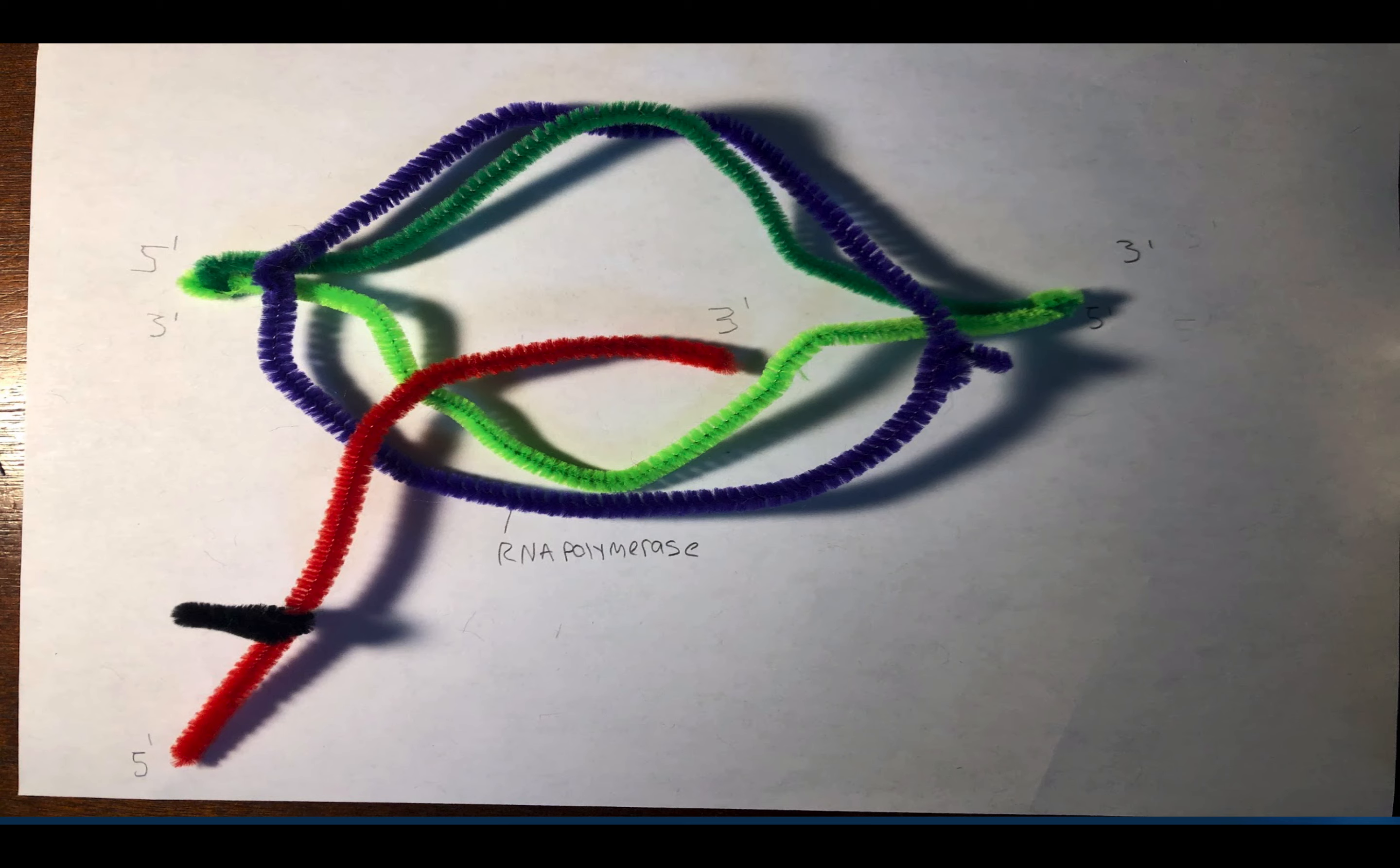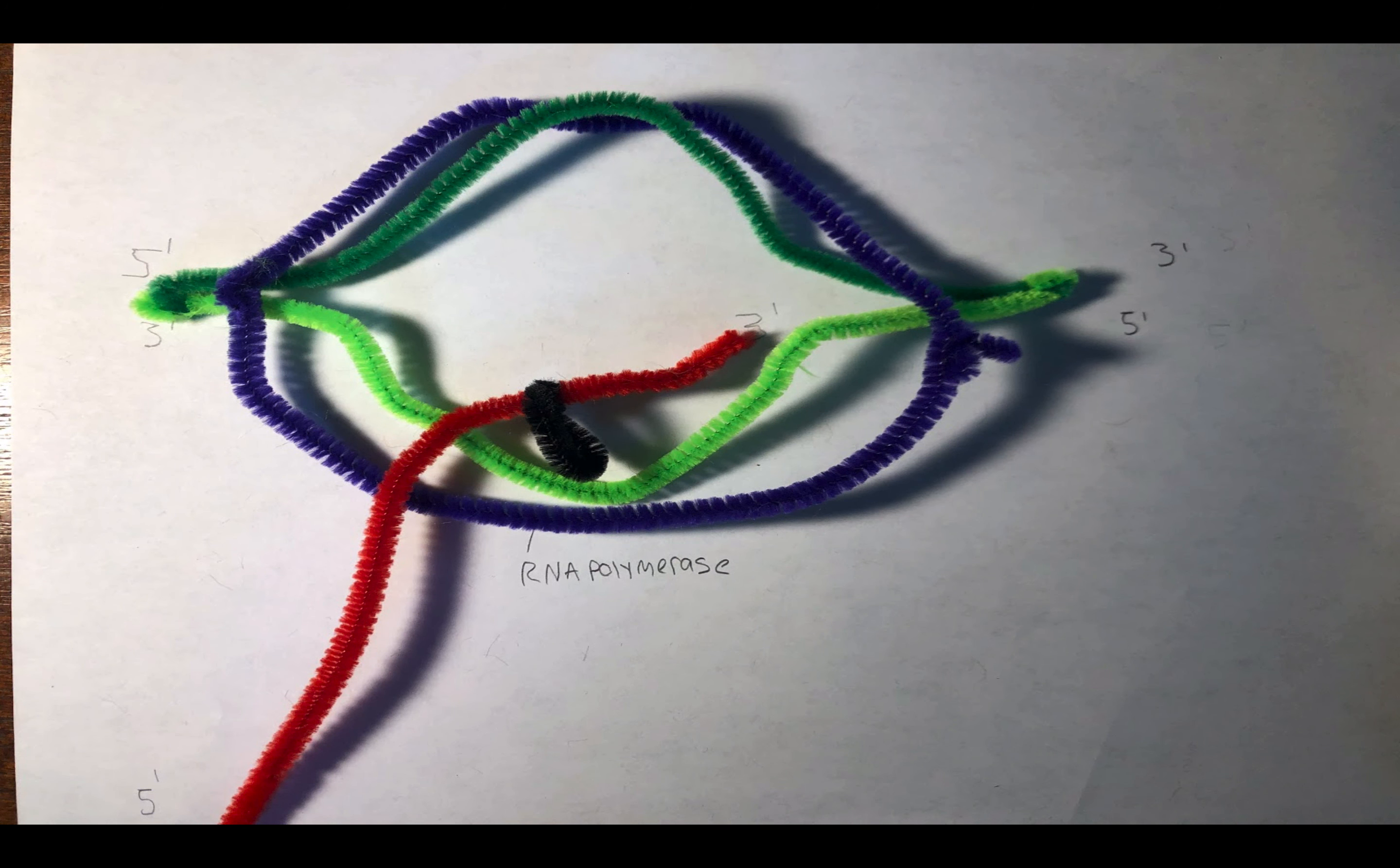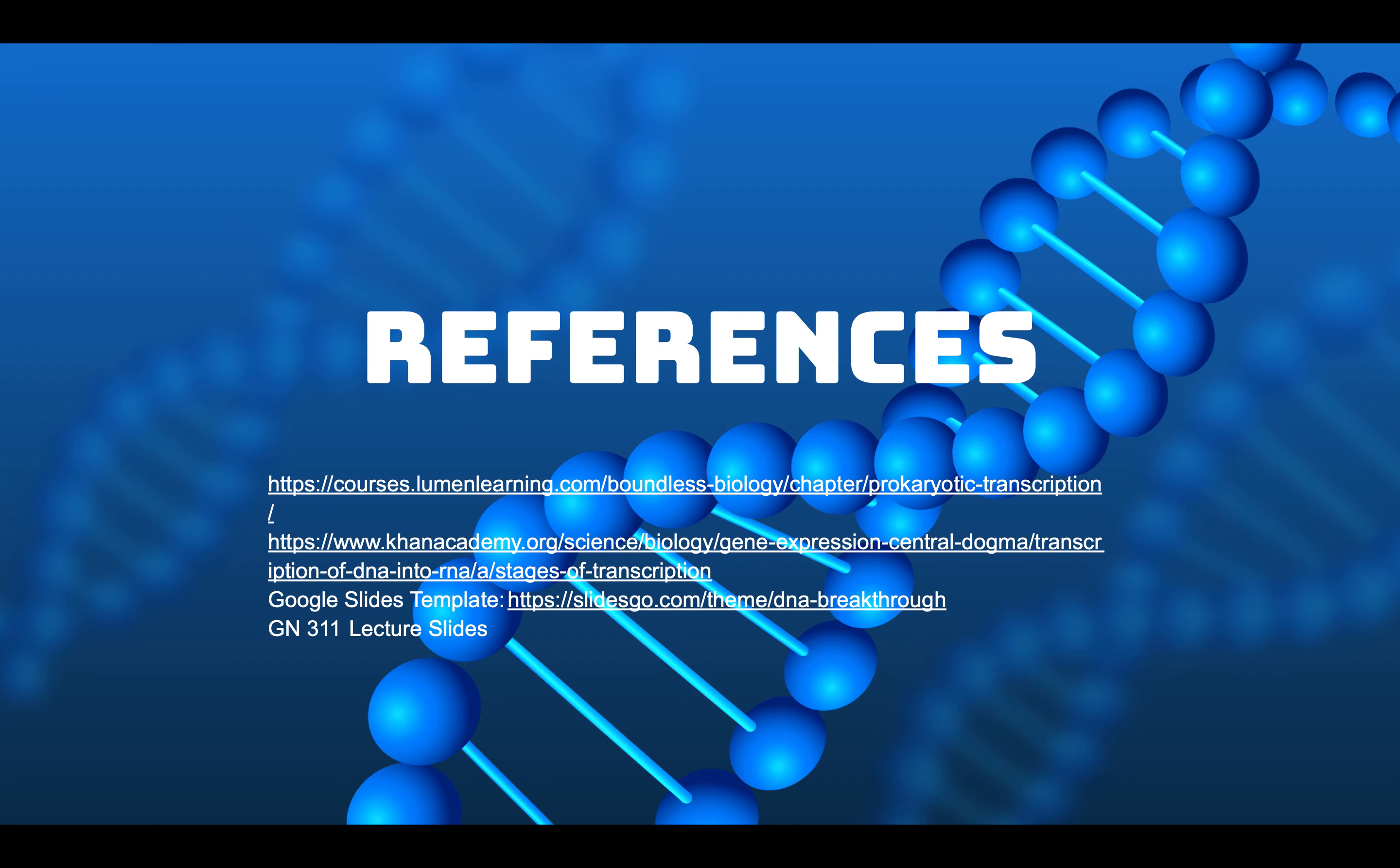It slides towards the 3' end of the RNA strand. When RNA polymerase, represented by the purple molecule, stops at the termination hairpin, the Rho protein initiates its helicase activity to cause the DNA and RNA strands to unwind, thereby ending transcription.